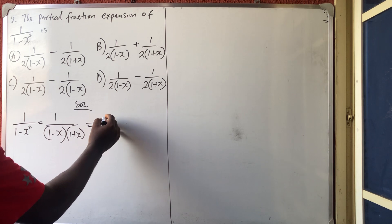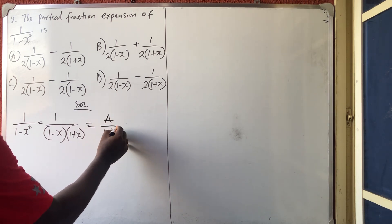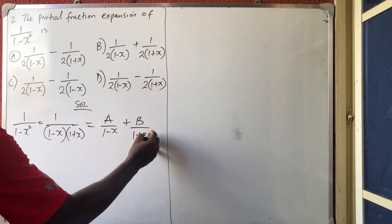So you are going to put it in partial fractions, which is a over 1 minus x plus b over 1 plus x.